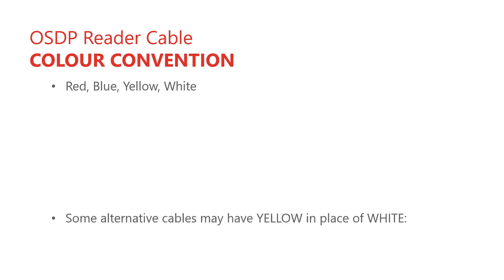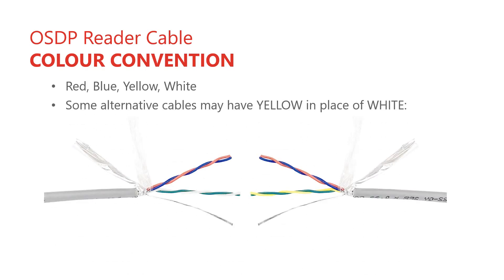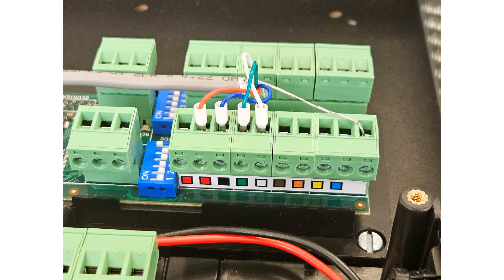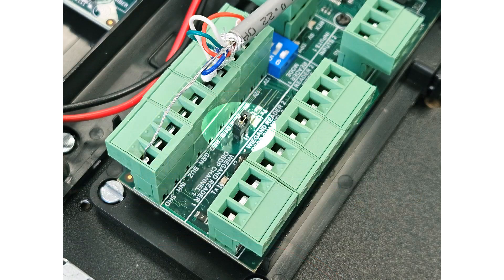Prepare the OSDP reader cable the same way as the RS485 cable, with bootlace ferrules on the cluster module end of the cable only — no ferrules on the reader end. Here is the advised wiring convention for the reader port: wire the red to 12 volts, blue to 0 volts, green to D0/A, and white to D1/B. Wiring the screen drain to SHD can help if there are concerns about electromagnetic interference. Connect the terminating jumper to the reader cable you are using — J1 for reader 1 and J2 for reader 2.